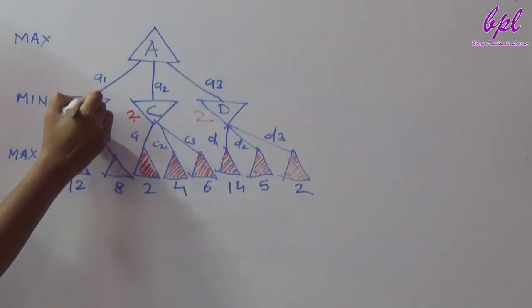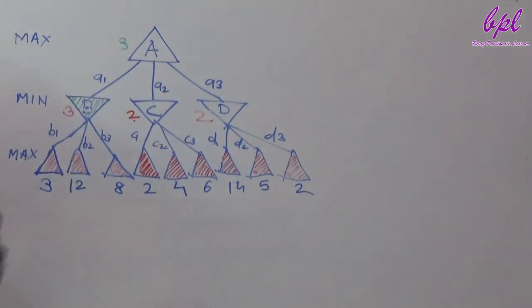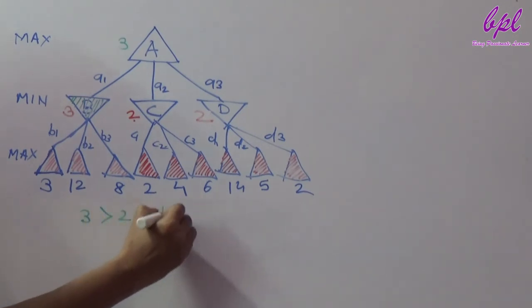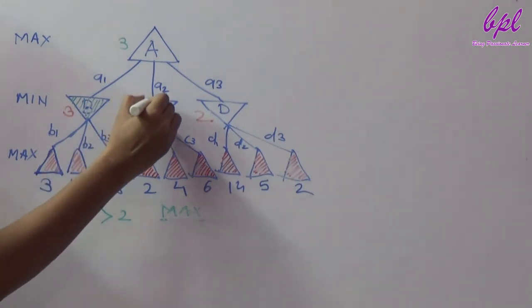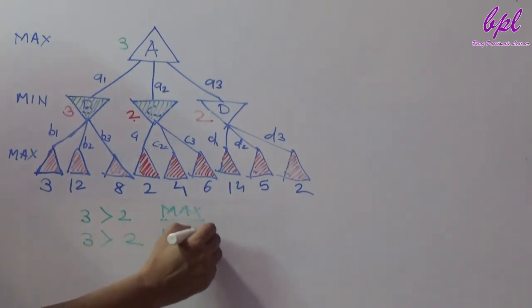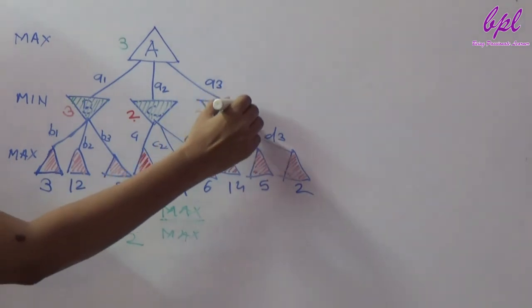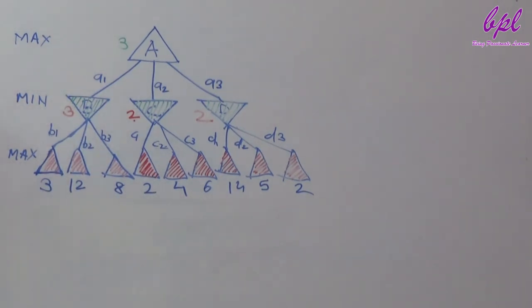A is a max node so it will select the maximum of values 3, 2, and 2. So a's minimax value will be 3. In this way, minimax values for all the nodes of the given game tree will be calculated. From all these values we can conclude that max's optimal move will be a1, which will give maximum chances of winning to max.